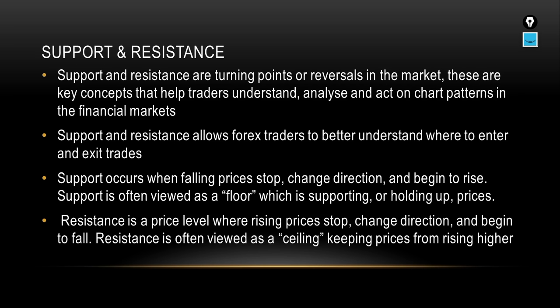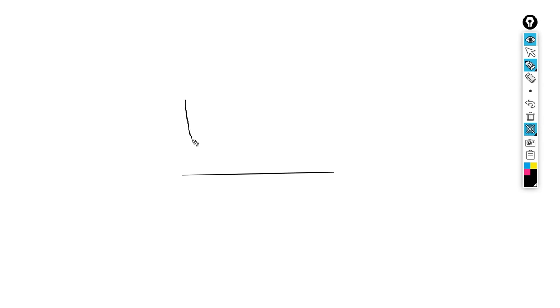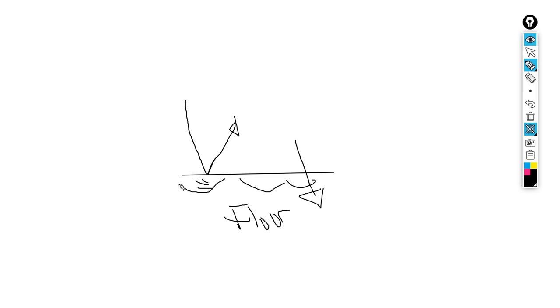Now we'll cover support and resistance. Support and resistance are turning points or reversals in the market — key concepts that help traders understand, analyze, and act on chart patterns. Support and resistance help forex traders understand where to enter and exit a trade. Support occurs when falling prices stop, change direction, and begin to rise. It's viewed as a floor holding up prices — price cannot go below this line, hence it's our support area.